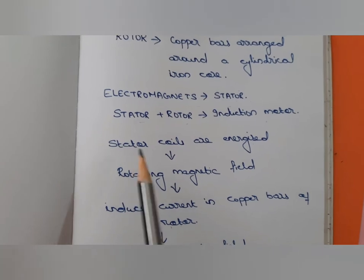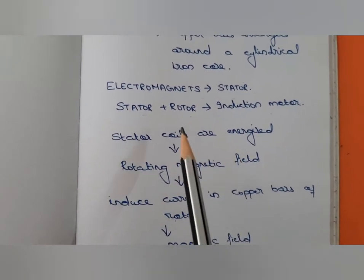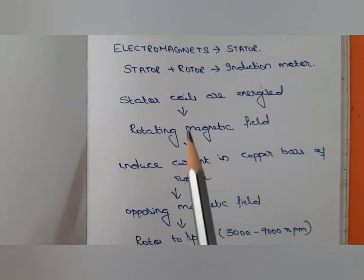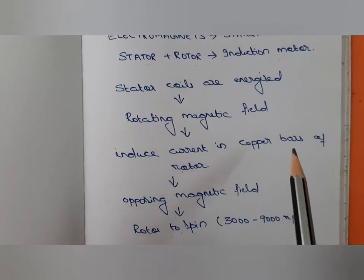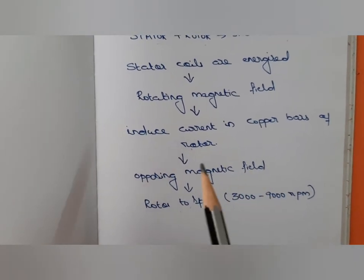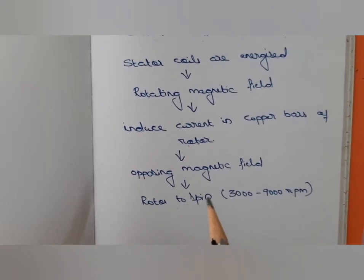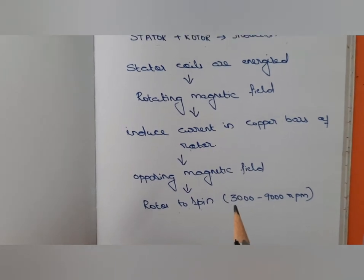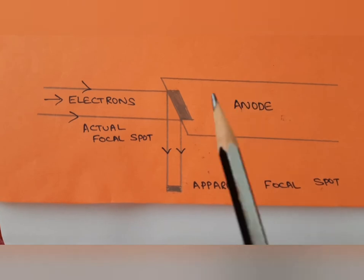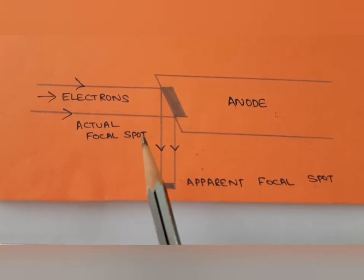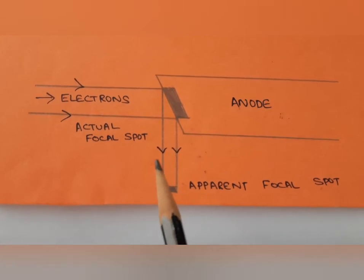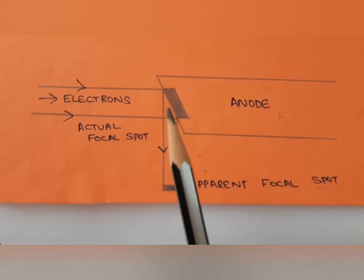To summarize: the stator coils are energized, producing a rotating magnetic field, which induces current in the copper bars, producing an opposing magnetic field that enables the rotor to spin at 3000 to 9000 rotations per minute. Now let's move on to Goet's line focus principle.